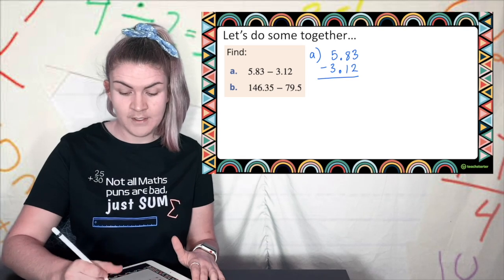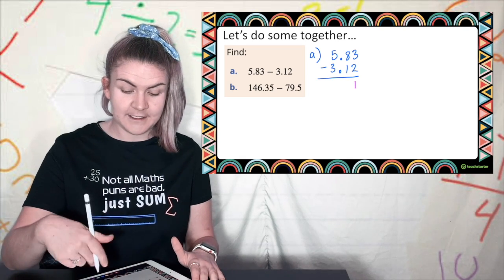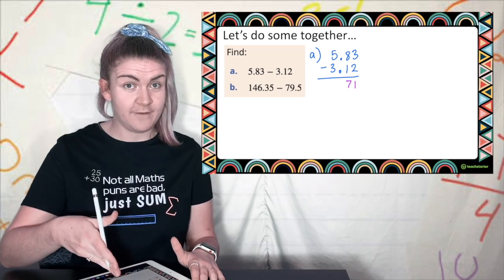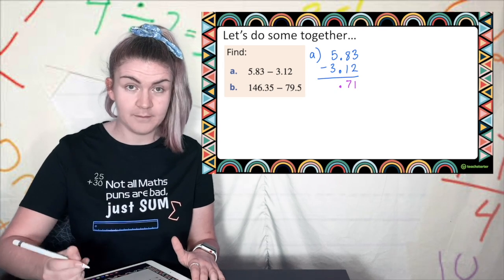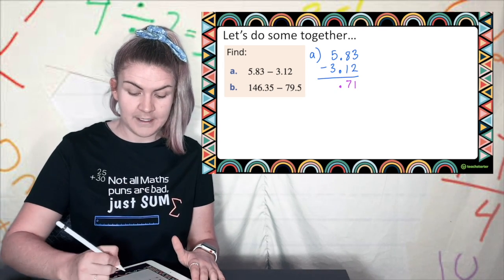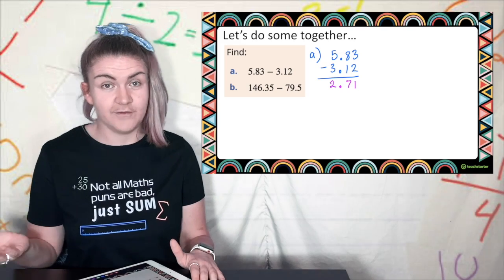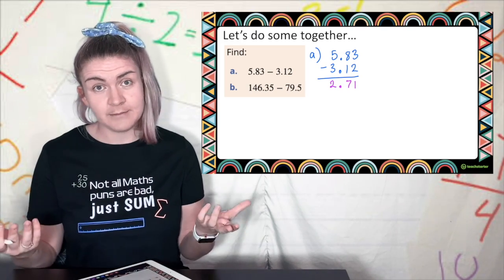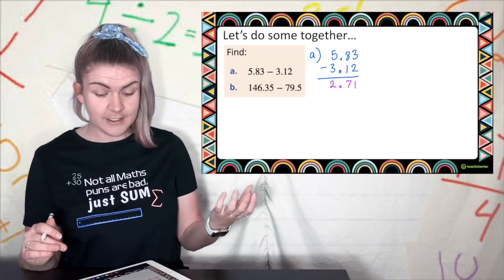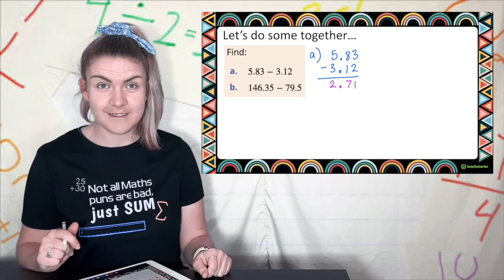Once they're lined up then I'm just doing the exact same thing that I would normally do for a subtraction. So 3 take away 2 is 1. 8 take away 1 is 7. Now I've hit a decimal point so I'm putting in a point and 5 take 3 is 2. So I've got 2.71. I'm going to check how reasonable it is. 5 take 3 is 2 and this is just bigger than 2. So that's perfect.